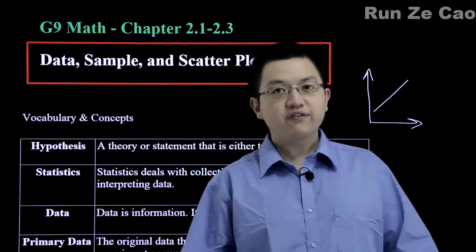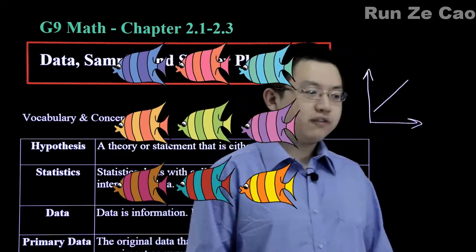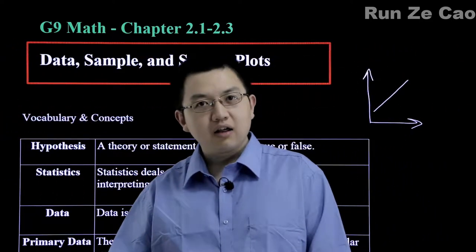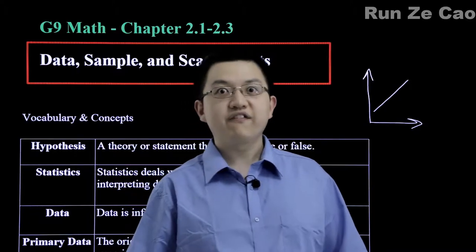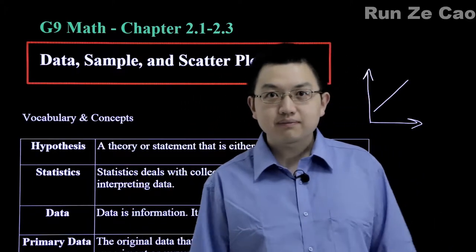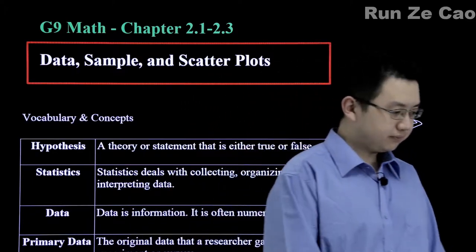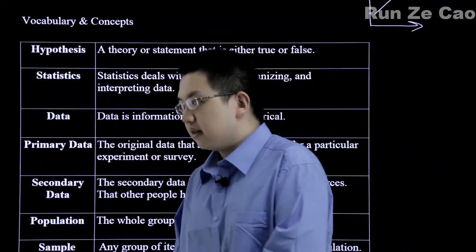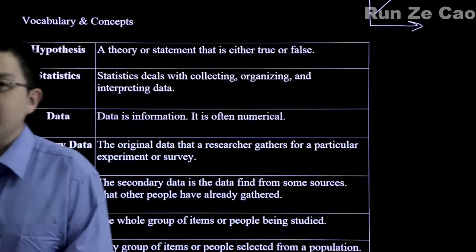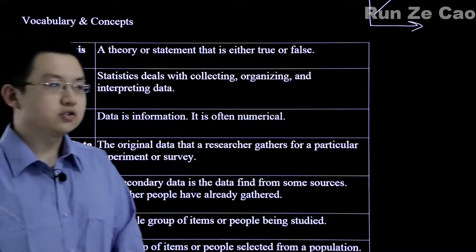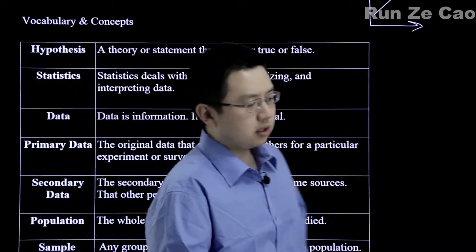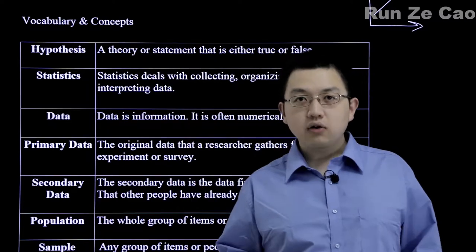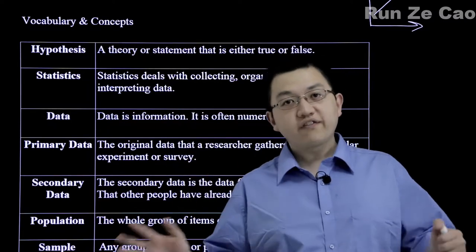For example, if you have a thousand fish and they all prefer one end of the fish tank to the other end, that's not likely if it's random. A hypothesis is a theory or statement that you're trying to test, so it's either true or false. Technically speaking, it's falsified or not falsified.